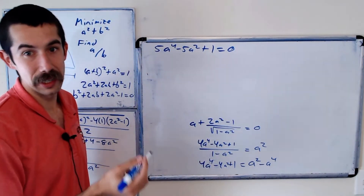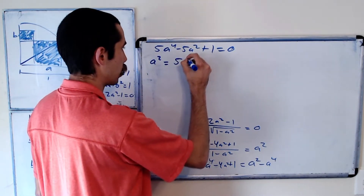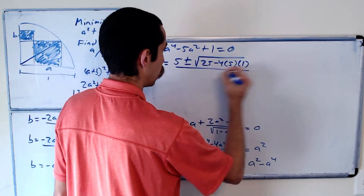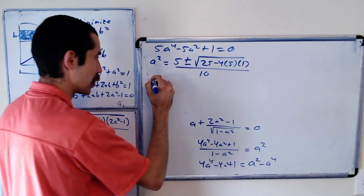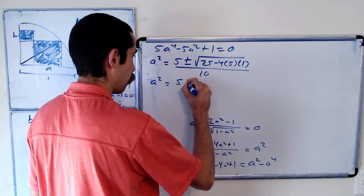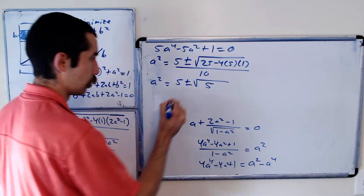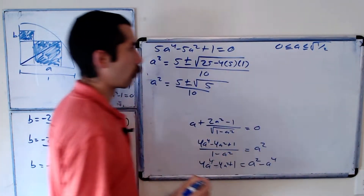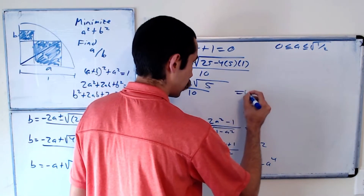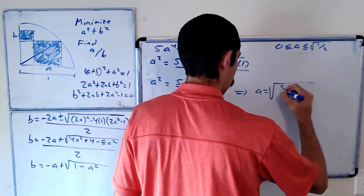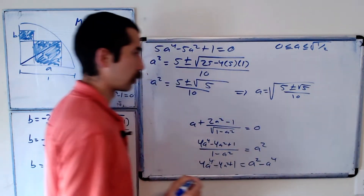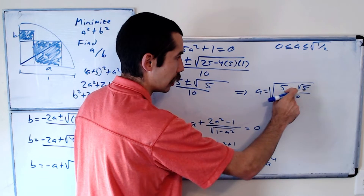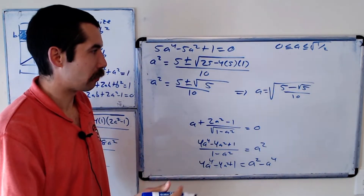Treating this as a quadratic in a², the quadratic formula gives a² = (5 ± √(25 − 20)) / 10 = (5 ± √5) / 10. Since a ≤ √(1/2), we discard the plus solution, giving a = √((5 − √5) / 10).